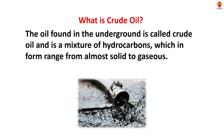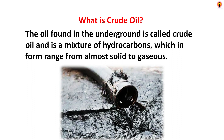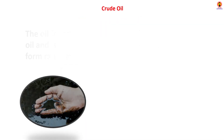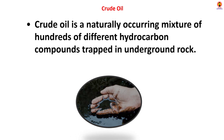What is crude oil? The oil formed in the undercoat is called crude oil and is a mixture of hydrocarbons which range in form from almost solid to gases. Crude oil is a natural aqueous mixture of hundreds of different hydrocarbon compounds trapped in underground rock.